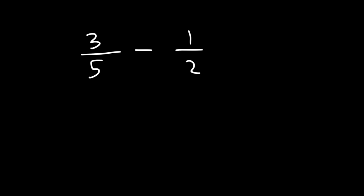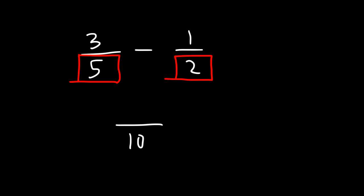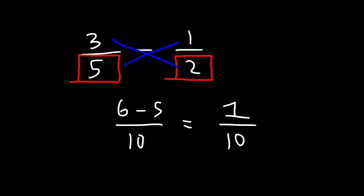The first thing we need to do is multiply the 2 denominators of the fractions. 5 times 2 is 10. And then we need to cross multiply. 3 times 2 is 6, and 5 times negative 1 is negative 5. So now we need to subtract 6 and 5, which will give us 1.